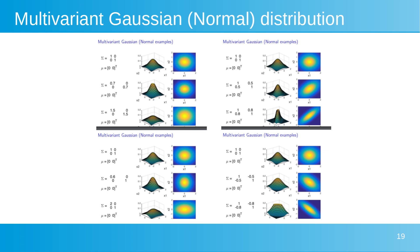The top-right quadrant demonstrates the effect of introducing positive correlations between X1 and X2 using positive off-diagonal values in the covariance matrix. The first example is the same standard Gaussian. With a positive correlation introduced, the contour plot becomes elliptical and tilts along the line X1 = X2. A stronger positive correlation further tilts and elongates the elliptical contour. The bottom-right quadrant shows the effect of negative correlations using negative off-diagonal values, with the same behavior but the tilt is along the line X1 = -X2.